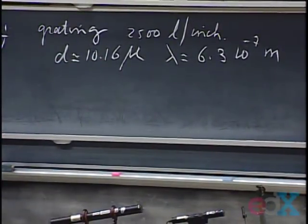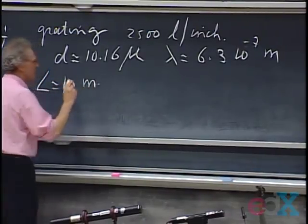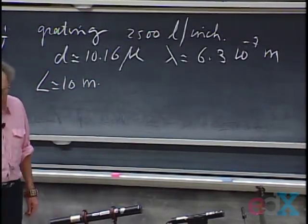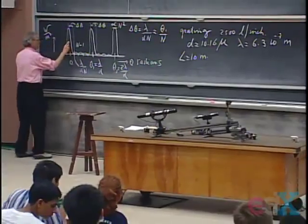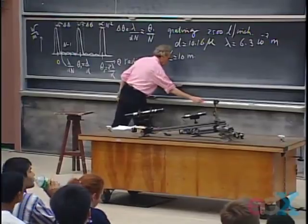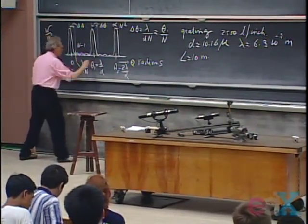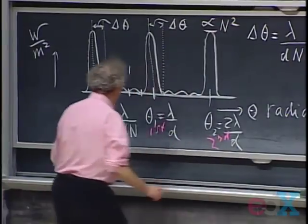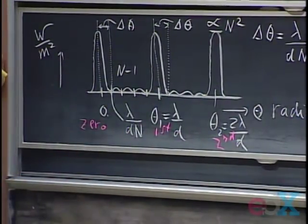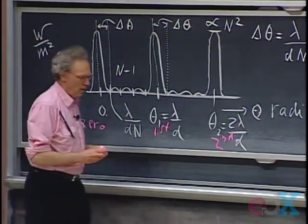I'll project the pattern on a screen at distance L of about 10 meters. This allows me to calculate where zero order, first order, and second order will fall. When n is zero, we call that zero order; n equals one is first order; n equals two is second order. You also have first order and second order on the other side. When n equals zero, that is zero degrees — the zero order is always right at the center when all sources are in phase.